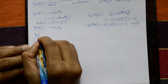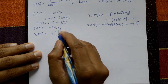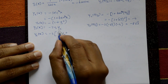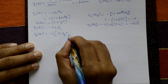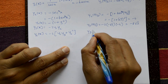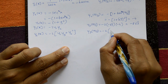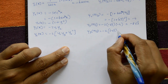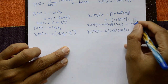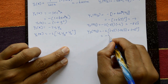For y₄(x): differentiating −2·y₁·y₂ using the product rule gives −2·(y₁·y₃ + y₂²). Substituting: y₄(π/3) = −2·[(−√3)·(−8√3) + (−4)²] = −2·[24 + 16] = −2·40 = −80.